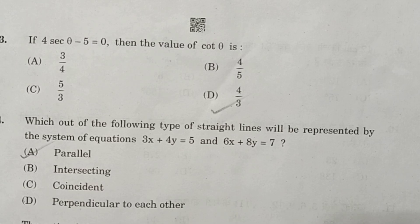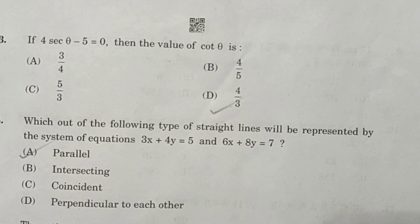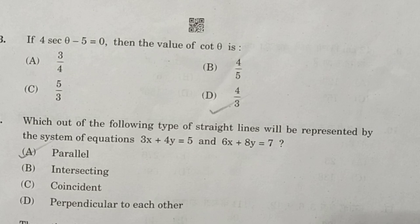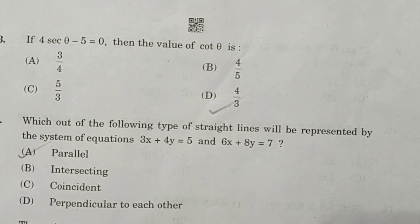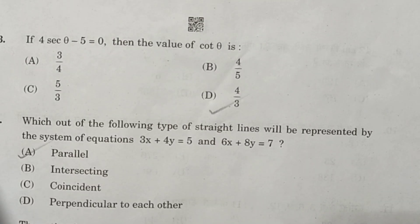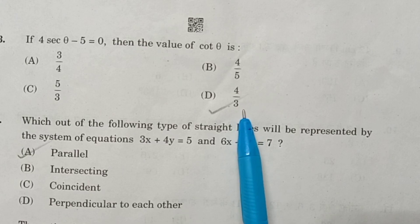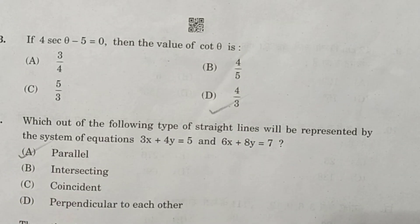Question 3. If 6 theta minus 5 is equal to 0, then the value, we will get X squared is equal to 5 by 4. Using the Pythagorean theorem, we will get the opposite side as 3, therefore X squared is equal to 4 by 3.